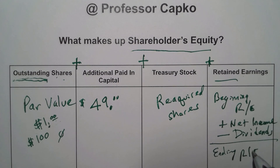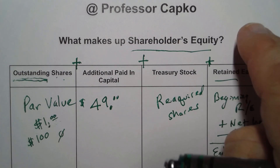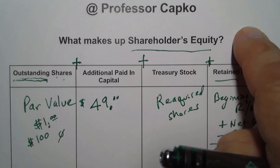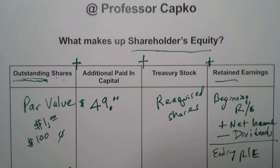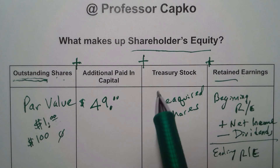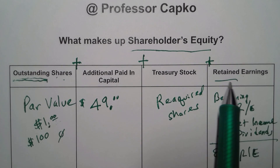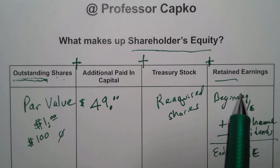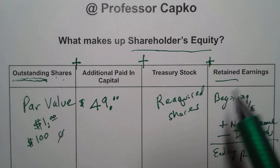I have a video where I talk more about how to calculate ending retained earnings — if you haven't seen that already, it's linked up here. So these are the four main components of shareholders equity: outstanding shares, additional paid-in capital, treasury stock, and retained earnings. If you add them all together, it will equal your shareholders equity.